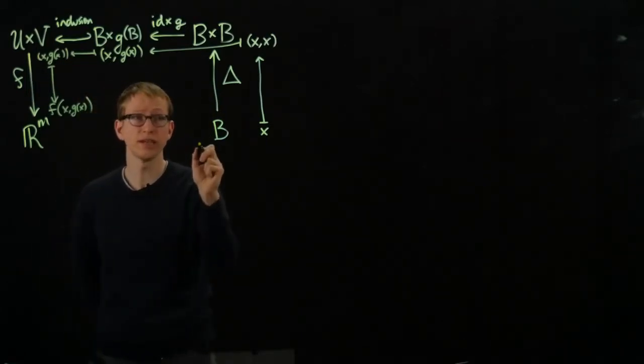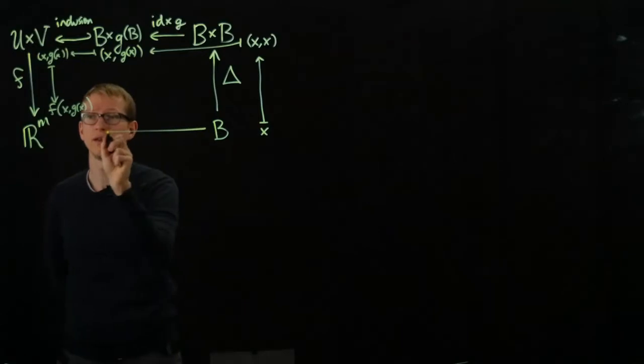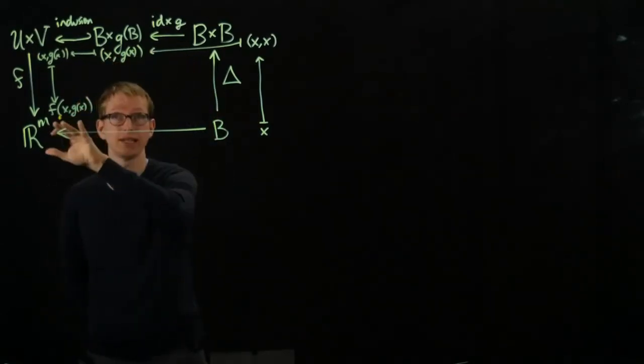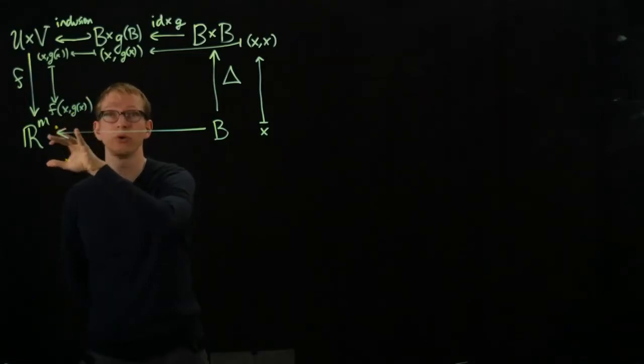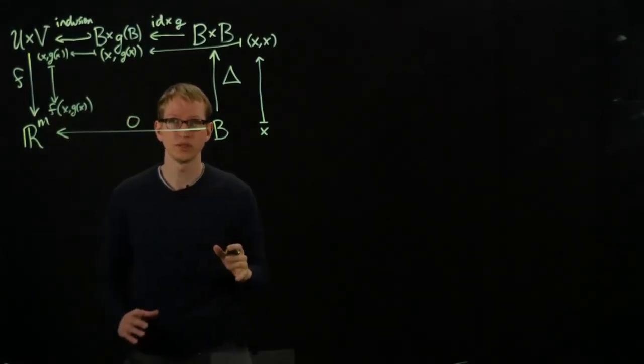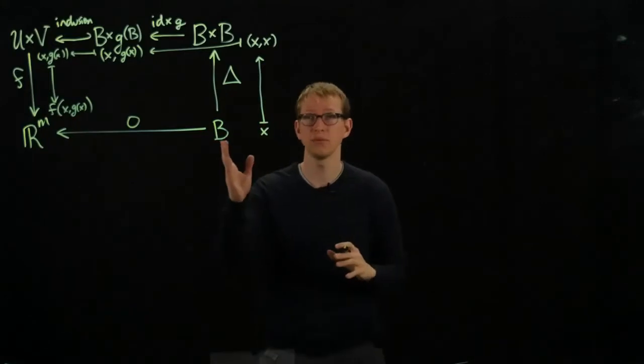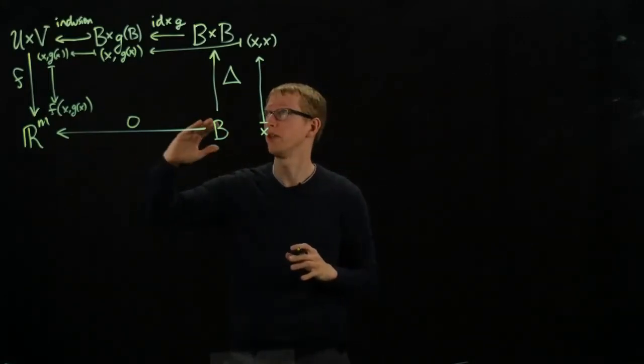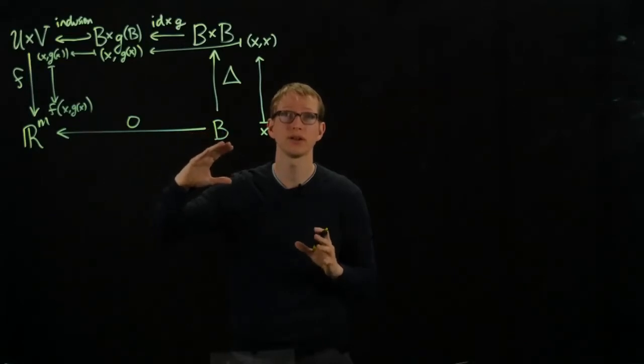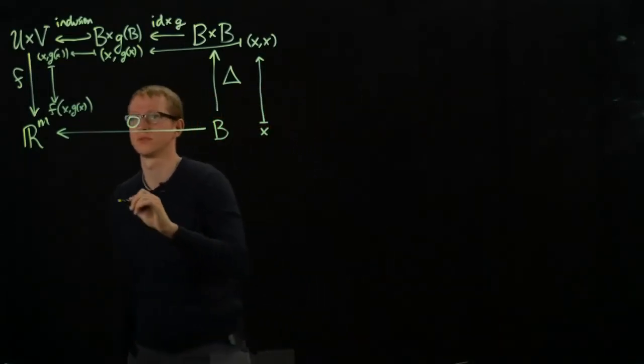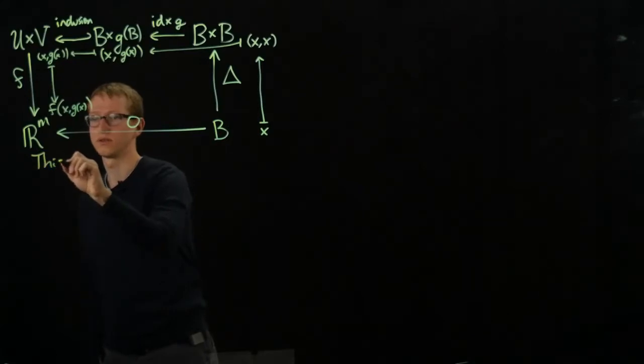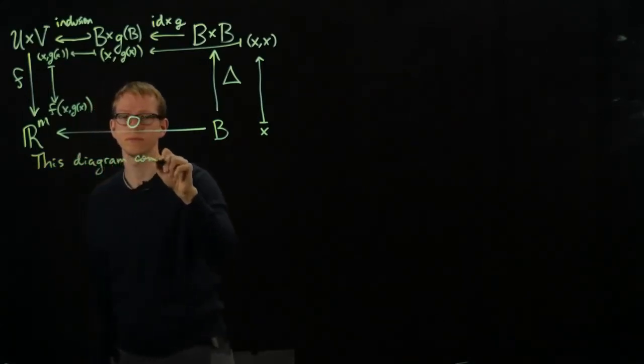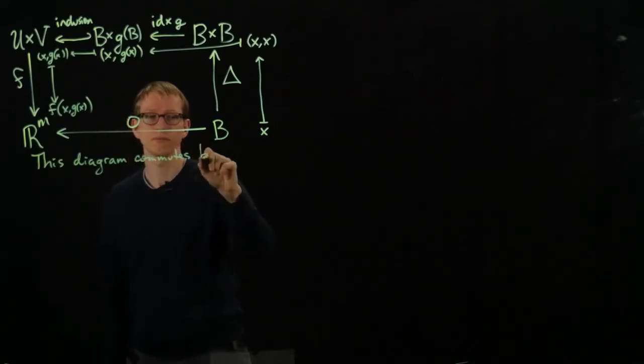The main assumption in this theorem says that this element here is equal to 0 in Rm. So if we think of just the 0 function that takes any element in B to 0, then the assumptions in the theorem can be summarized by saying this diagram commutes by assumption.